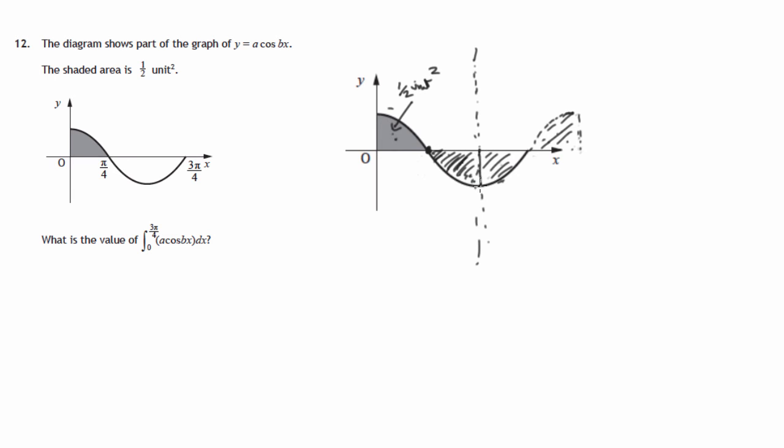But because this is below the x axis, in the integral, this would turn out to be minus a half. And in the integral, this area here would turn out to be a minus half. Now, we can't really say it's minus a half unit squared because it doesn't give the area.